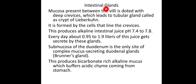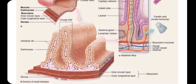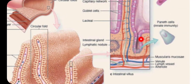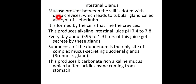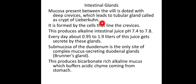Intestinal glands are present between the villi — the mucosa is dotted with deep cervices which lead to tubular glands called the crypts of Lieberkühn. These are formed by the cells lining the cervices. They produce alkaline intestinal juice with a pH of 7.4 to 7.8. Every day approximately 1.2 to 1.5 liters of this juice is produced.